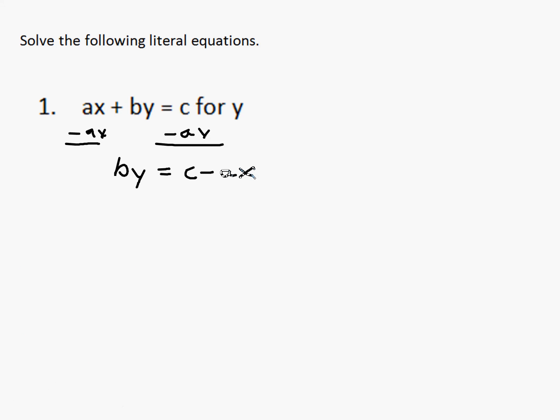We notice that right here b is multiplied times y, so to undo that multiplication, we're going to go ahead and divide both sides by b.